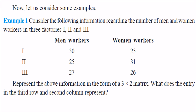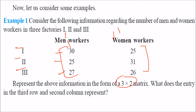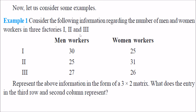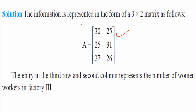Let us see some examples. We have information on men and women working in three factories, and we want to represent this as a 3 × 2 matrix — three rows and two columns. The entry in the third row and second column is found at their intersection, which is 26.